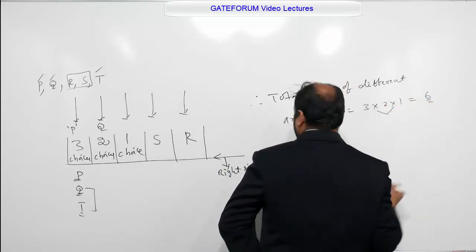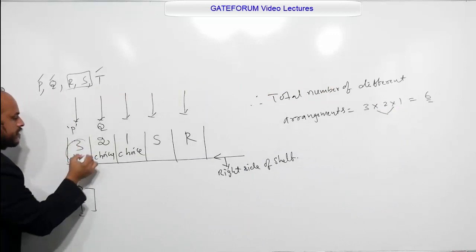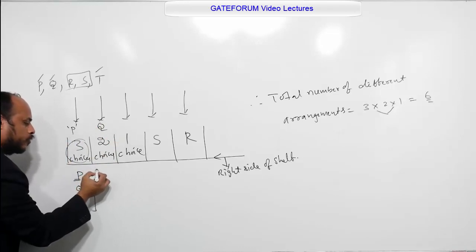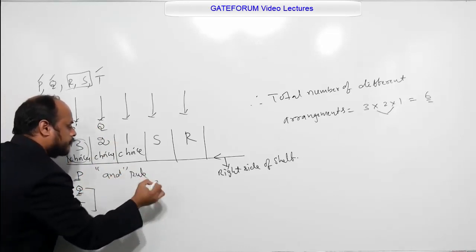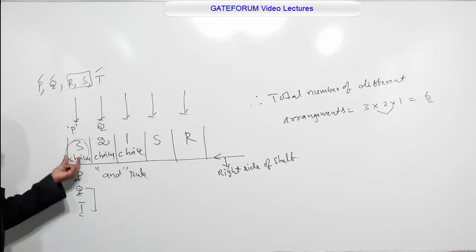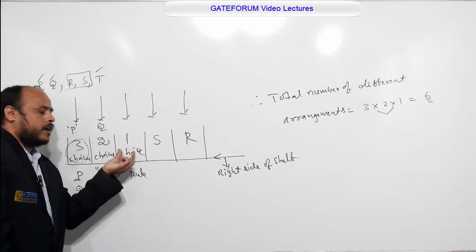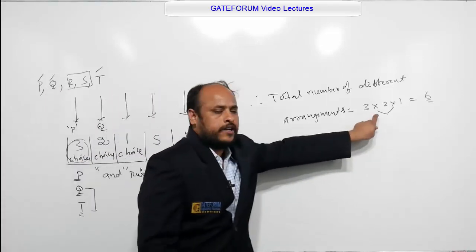Why we are using multiplication here? Because here, to fill the first position, we have three choices and we have to fill the second position. We are using the rule AND rule. After filling this, AND we have to fill. After filling second position, AND we have to fill the third position. That is why we are using AND rule. That is why here we are using multiplication.